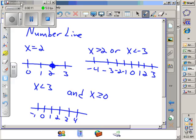Next one, how do I graph this one? Well, x has to be greater than 2, open circle, arrow going to the right. x has to be less than negative 3, open circle, arrow going to the left.